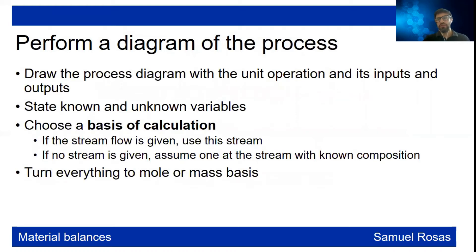In order to solve the balance, the first thing you need to do is read the problem and perform a diagram of the process. Draw the process diagram with the unit operation and its inputs and outputs. State known and unknown variables. Choose a basis of calculation — if the stream flow is given, use that stream; if not, you have to assume one of the streams with the known composition as the basis of calculation.